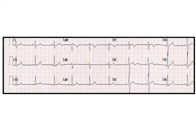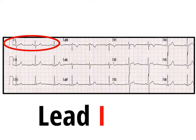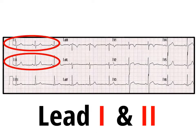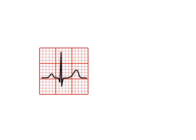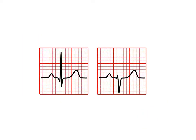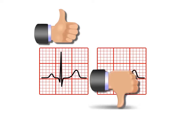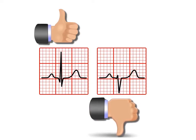You can work it out really simply by finding leads 1 and 2 and deciding if these leads are positive or negative. Use your thumbs — put a thumb up for a positive lead or down for a negative.